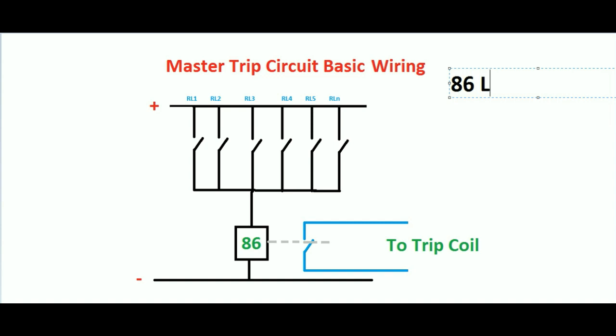Only for the tripping circuit, the 86L is the maximum. If you have a power plant, it is not like 400 MW. Note that the 86L is the same.